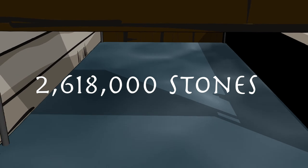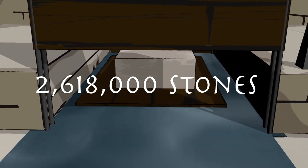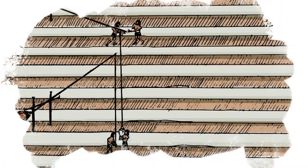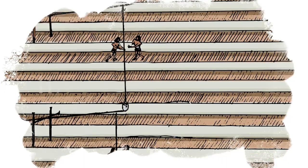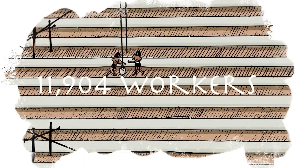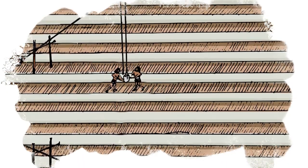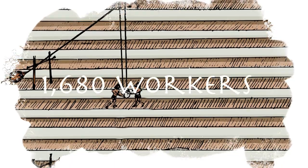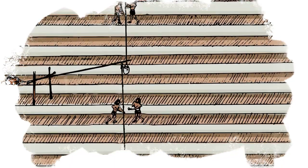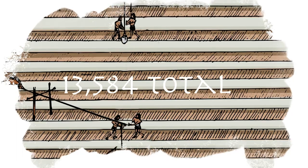The Great Pyramid is made of approximately 2,500,000 stones. During the first year of construction, 11,904 workers operated Shadoof lines, and 1,680 workers operated sluice lines, totaling 13,584 workers.